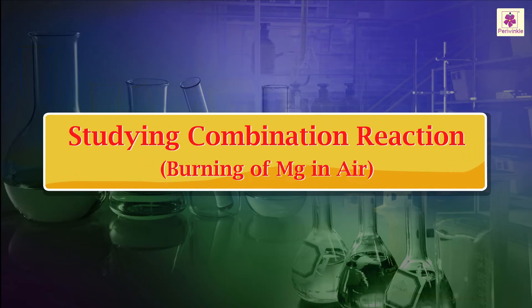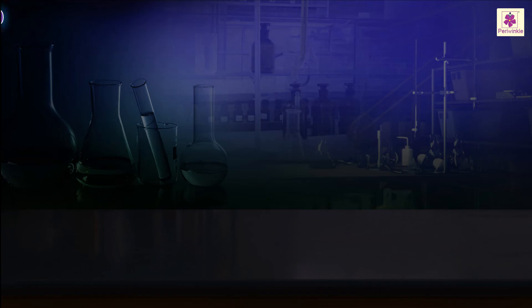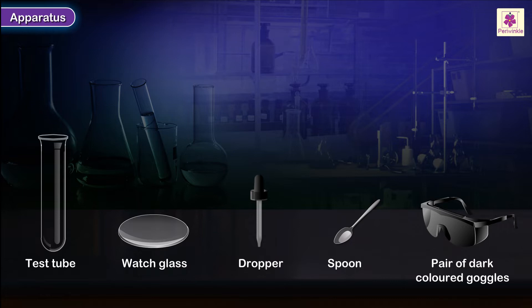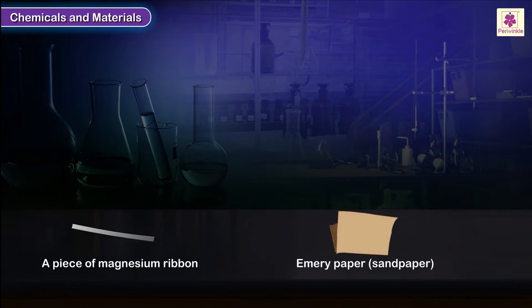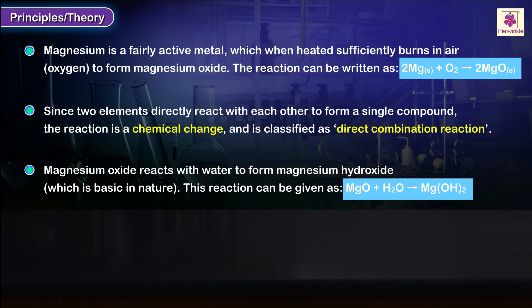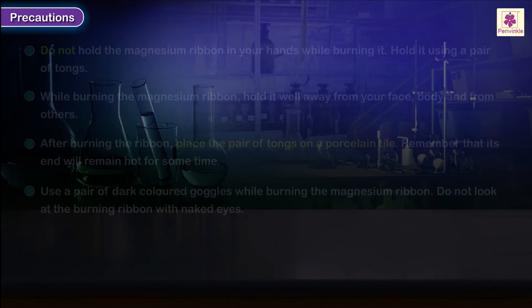Studying combination reaction. Aim: to study the reaction when a magnesium ribbon burns in air and classify it as a physical or chemical change. Apparatus, chemicals, and materials, principles, theory, notes, and precautions are outlined.